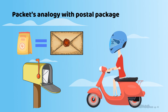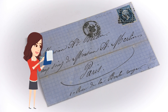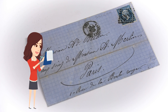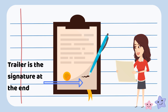You can visualize the network packet as a paper document sent through the postal service. The header is the envelope that contains the destination address and other instructions. The payload is the actual document or content inside the envelope, and the trailer is the signature at the end of the document.